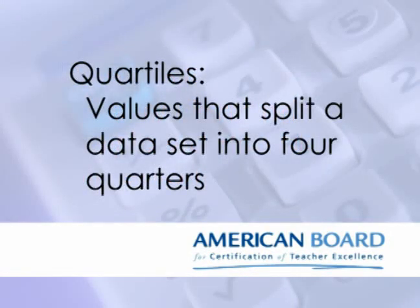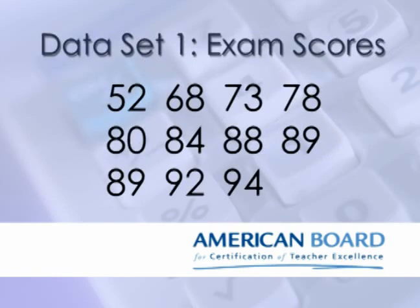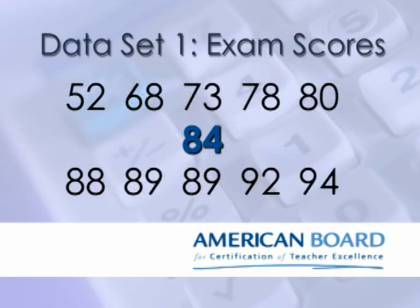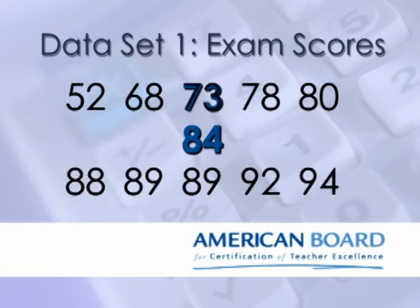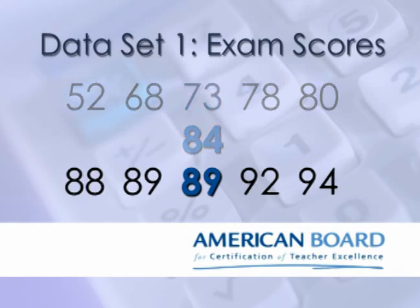Quartiles can be used to further split data, in a manner not too different than the median, which split the data in half. In fact, quartiles split the data into quarters, hence the name. Looking again at the data set of exam scores, to identify the quartiles, let's let the median split the data into two separate data sets, each of which has five values. The median of this five-value set is the first quartile of the overall data set. Similarly, 89 is the third quartile of the data set, because it's the middle value of those five numbers. By the way, the median is also known as the second quartile.